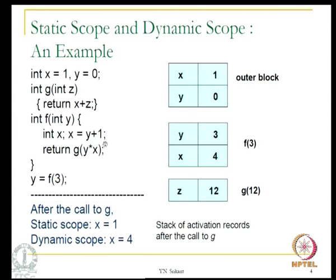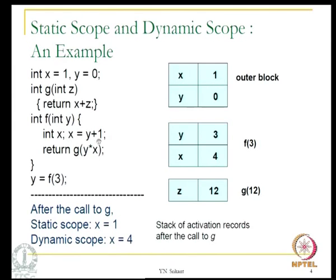Dynamic scope says do not bother about the textual position of the variables — just consider the most recent activation record in which the name occurs. In the same example, the control comes to f and within f we refer to the local variable x. As per dynamic scoping, we consider the activation record for g — there is no instance of x there — so we go to the previous activation record for f, and here there is an occurrence of x. So even though x is a local variable within f, according to dynamic scoping rules this is the variable used, and x plus z will be returned with a different value.